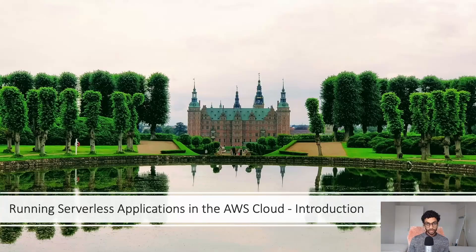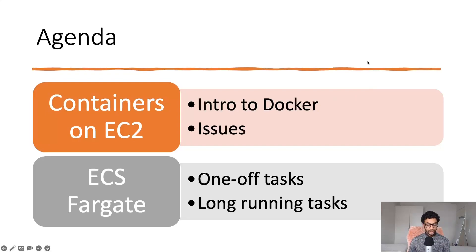Hello and welcome to another video. Today I'll be talking about running serverless applications in the AWS cloud. This will just be an introductory video where I go through some high-level overview and explain the concepts, so there will be no code. To start off, I'll be talking about containers on EC2, what Docker is and what containerization is, as well as the issues we face when running containers on server-based environments. After that I'll be talking about AWS's serverless compute platform, known as ECS Fargate, and two ways you can run containers on Fargate.